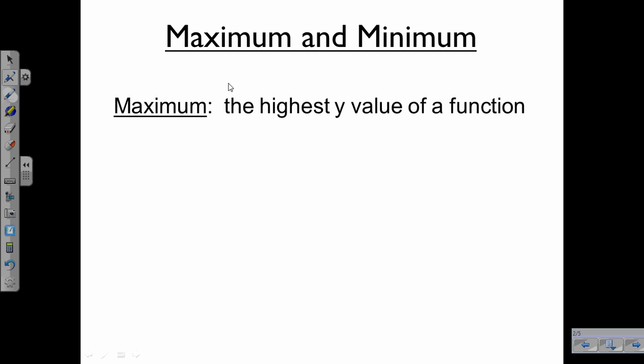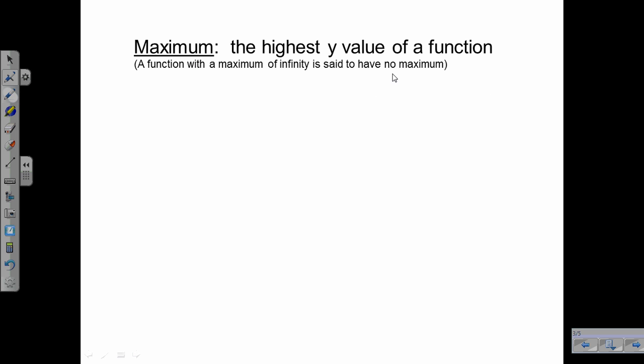The maximum is the highest y value of a function, and the minimum is just the lowest y value of a function. We're only worried about the y coordinate in this case, not the value of x. Let's look at maximum first. If a function has a maximum of infinity, we just say that it has no maximum.